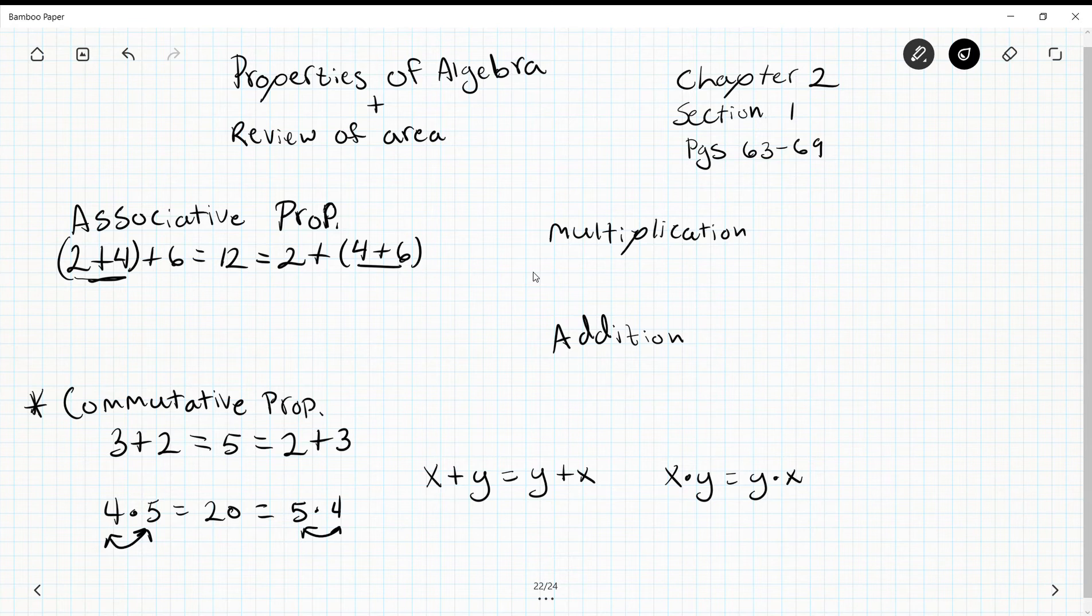The associative property changes the order in which I do these things. If I were to change this for multiplication, I'm going to do 1, 2, and 3. 1 times 2 in parentheses times 3 is 6, and the same goes for 1 times parentheses 2 times 3. First I'm doing 1 times 2 and then times 3. Next I'm doing 2 times 3 and then times 1.